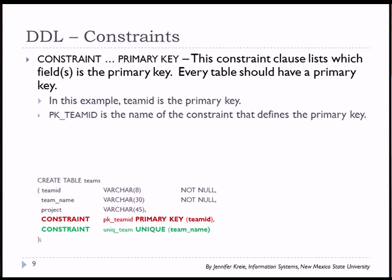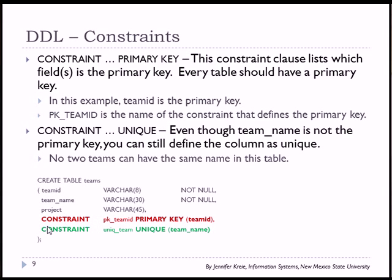In the same example for creating a teams table, we have two constraints defined. The one shown in red is a definition for the primary key, where we use the CONSTRAINT keyword and give a name to the constraint. We've defined it as a primary key constraint and designated the column Team ID — it could be more than one column, but in this case we have one column, Team ID, as the primary key. We also have a uniqueness constraint. In this example, we want to make sure that the team name is unique even though we're not using it as the primary key. If I have a team table with 200 records, no two teams can have exactly the same name.